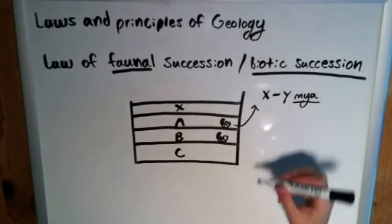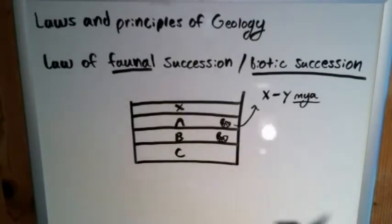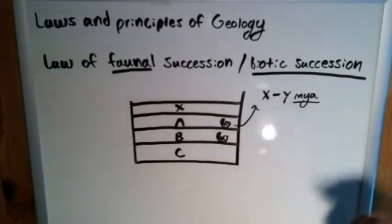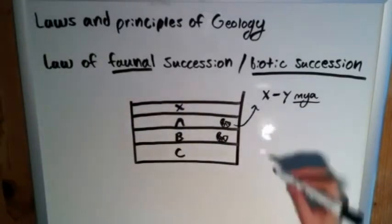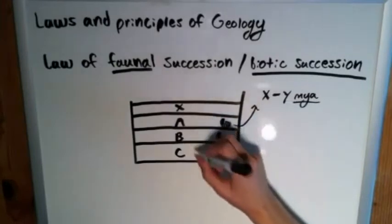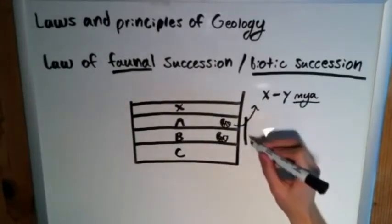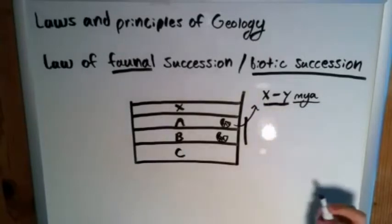So we know that from this method, it's a bit different from the law of superposition, in that we can't really, it isn't used to say, well, this is younger than this, is older than this, etc. But it's used to say, well, since these two contain the same fossils here, then we can assume that they are both from this time period, from this X through Y million years ago time frame.